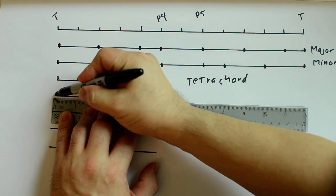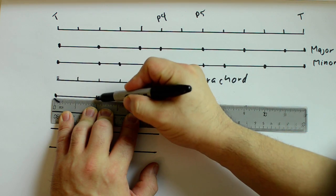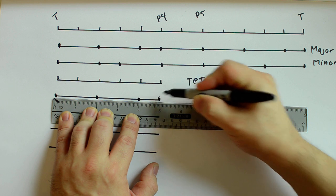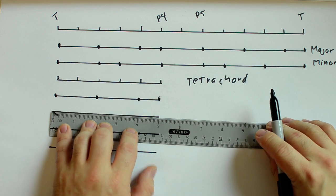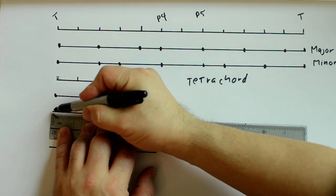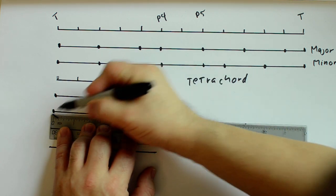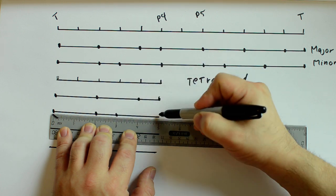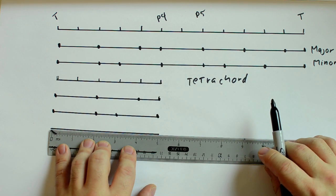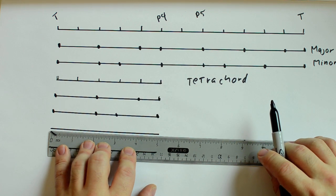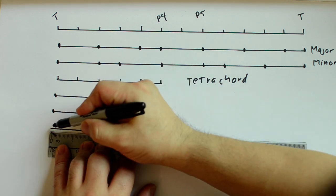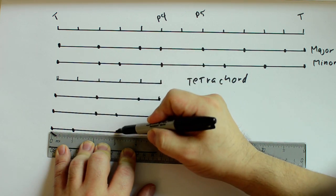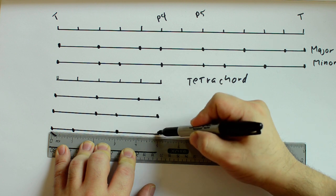The first one would be: whole step, whole step, half step. The second one would be: whole step, half step, whole step. And the third one would be, predictably: half step, whole step, whole step.